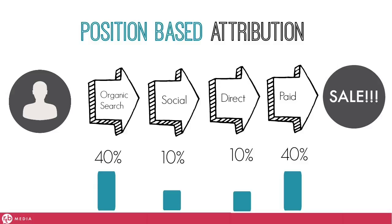Another model is the position-based attribution model. It puts 40% of the value on the source that drove the first click, 40% on the source that drove the last click before conversion, and divides the remaining 20% across the sources touched in between. While it gives the majority of credit to first and last click, I think it still dilutes the value of the middle sources, so there's room for improvement.